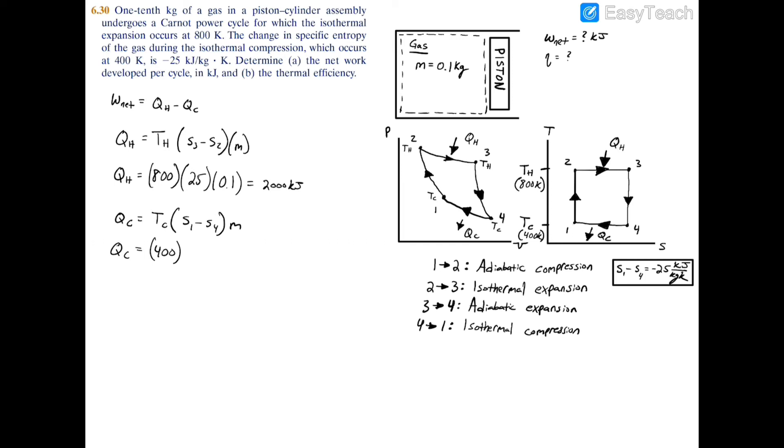Plugging in our values: T_c = 400 K, S1 - S4 = -25 kJ/(kg·K), and m = 0.1 kg. This gives Q_c = -1000 kJ, which is leaving the system. This makes sense because heat always transfers from hot to cold.